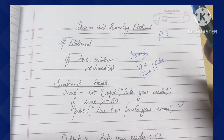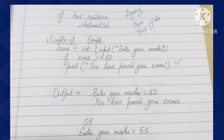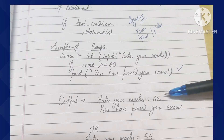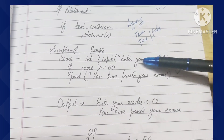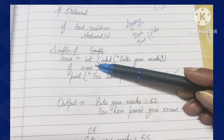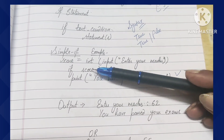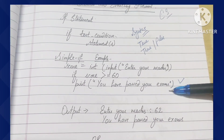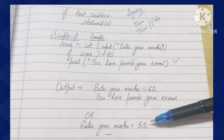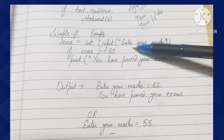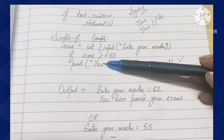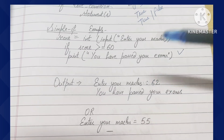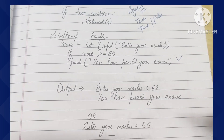If the entry is 62 and it is greater than 60, the condition will run. But if we give marks as 55, then 55 is not greater than or equal to 60 — the condition is false. If marks equal exactly 60, the condition is also false in that case. So there is no output when the condition is not satisfied.